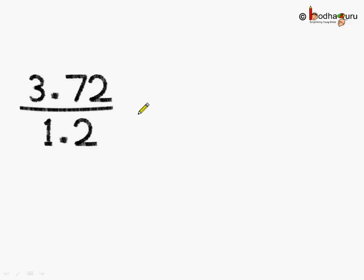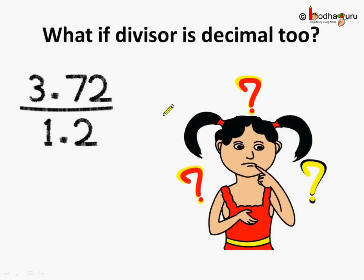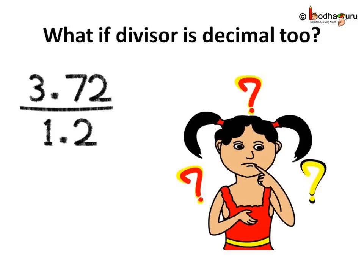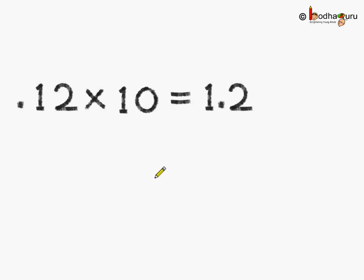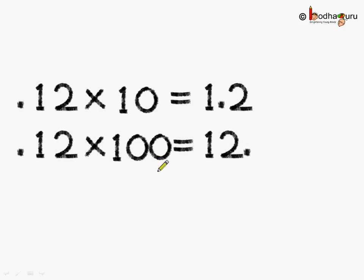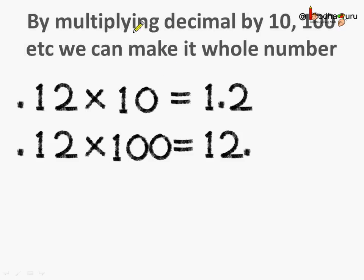But there is a challenge — what if the divisor also has a decimal point? Maths is simple. We know that by multiplying any decimal number by 10, 100, or 1000, we can make it a whole number. How many zeros you add determines how many places the decimal point moves to the right. So by multiplying a decimal number by 10, 100, or 1000, we can make it a whole number.